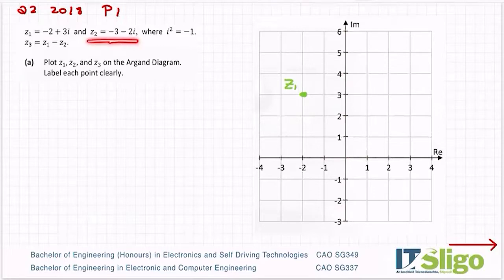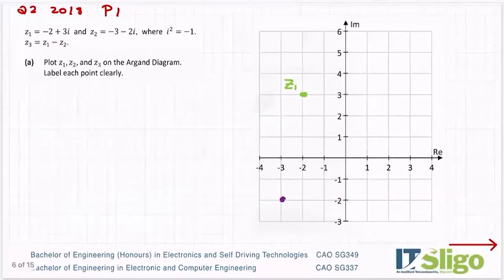Z2 then minus 3 down to minus 2i. So I make that one down there to be Z2.